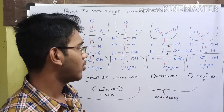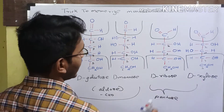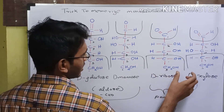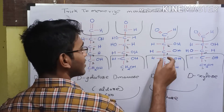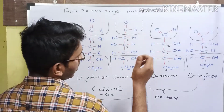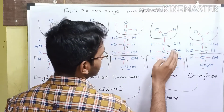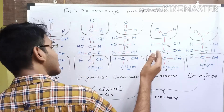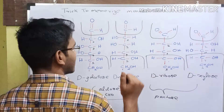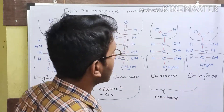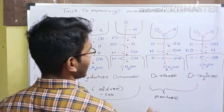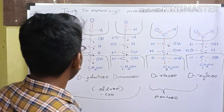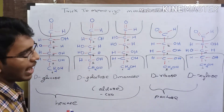Based on the structure of ribose, you can memorize the structure of xylose. Xylose has only one difference compared to ribose: at the 3rd carbon atom, the hydroxyl group is present on the right hand side in ribose and hydrogen on the left. But in xylose, the hydroxyl group is on the left hand side. Now we are clear with all 5 structures of aldoses.